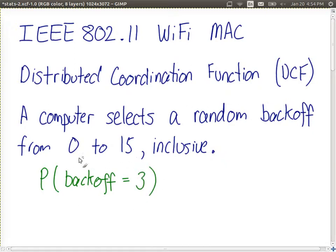We're selecting from a set of 16 values, 0 to 15 inclusive, so the probability of selecting a backoff of 3 is 1 divided by 16. Similarly, the probability of selecting any particular backoff value is 1 divided by 16.